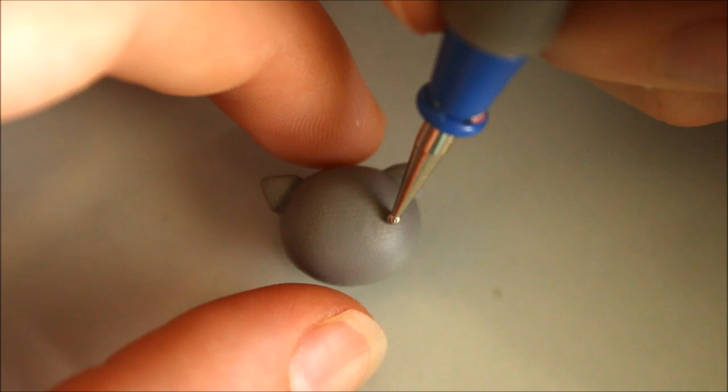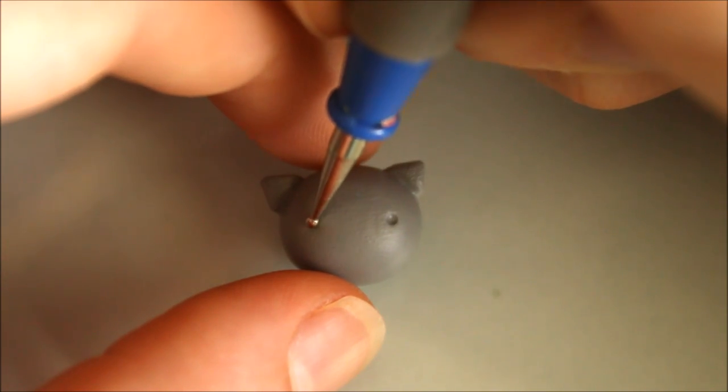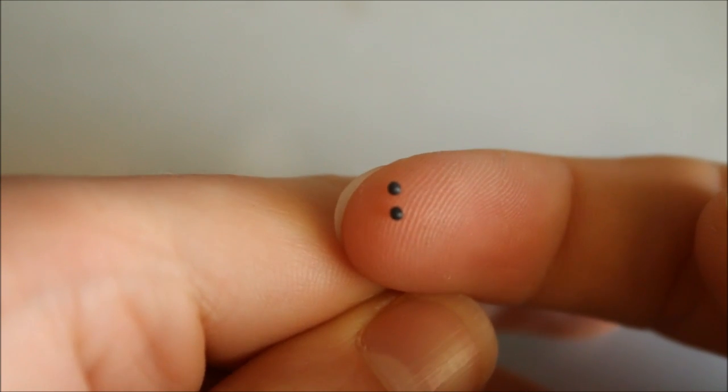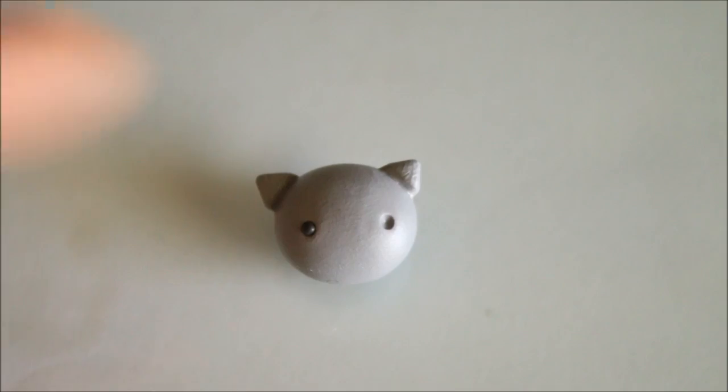Now I'm going to add the face. First I'm creating two indents with a dotting tool where I want the eyes to be. Roll out a piece of black clay and cut off two small sections then add these to the head after rolling them into balls.